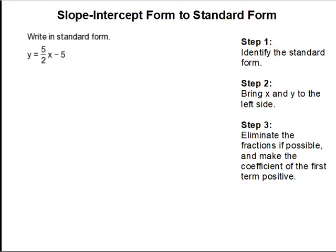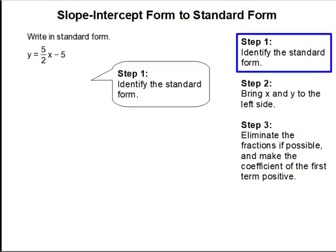Slope-intercept form to standard form. In this problem, we are going to convert our slope-intercept form to standard form. Step 1: The first thing we're going to do is identify the standard form. The standard form is ax plus by equals c.